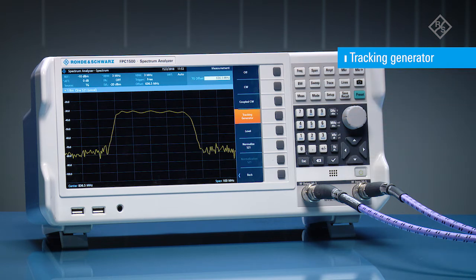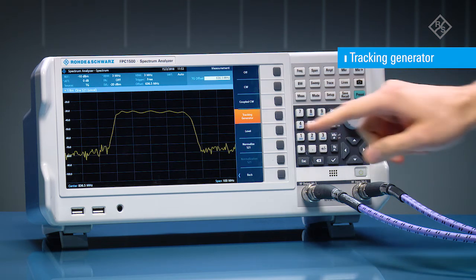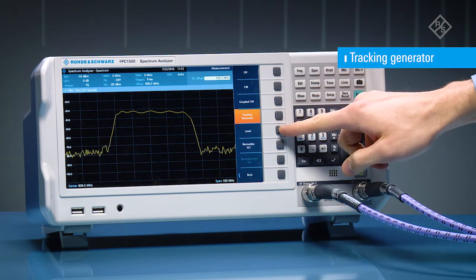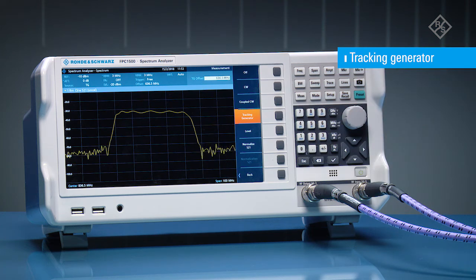The FPC-1500 can also apply frequency and level offset, which comes in handy when measuring devices such as mixers and power amplifiers.